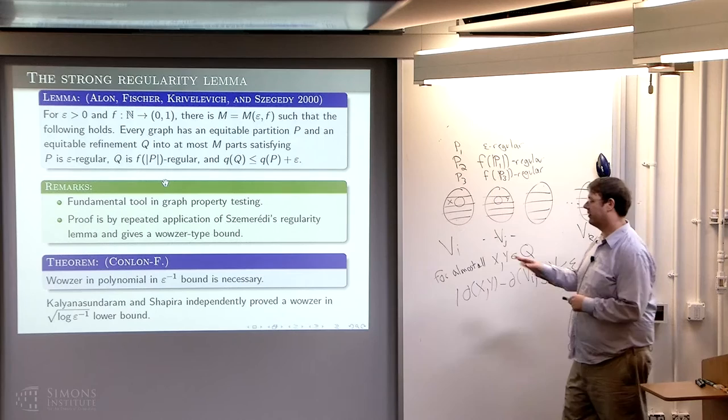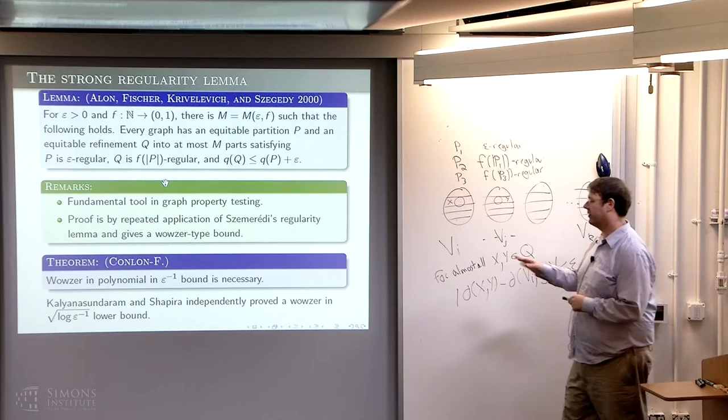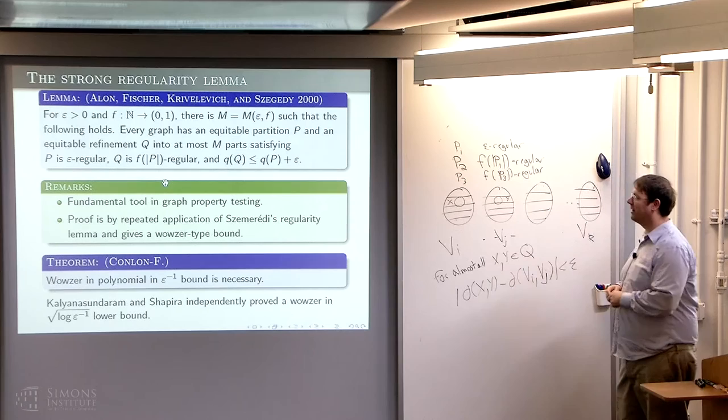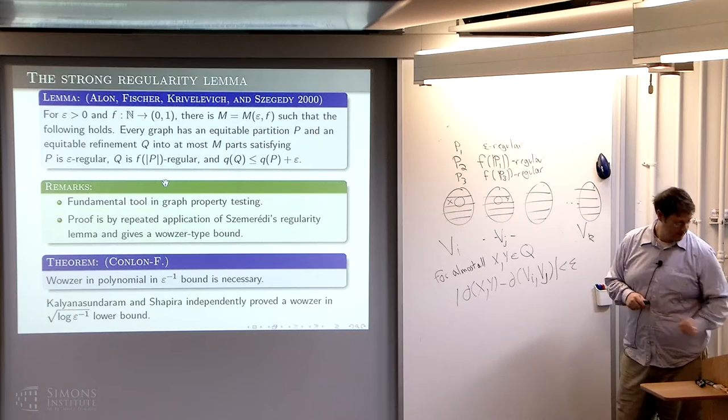Around the same time, Kalyan Sundaram and Shapira independently also gave a Wowser-type bound — their bound was a bit weaker and they did things differently. But there are two proofs showing that Wowser-type bounds are necessary.